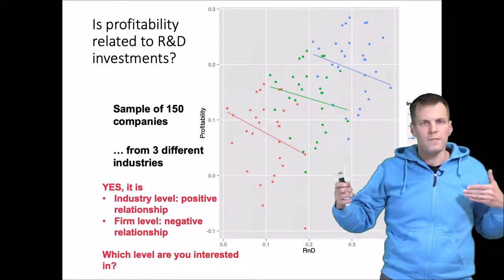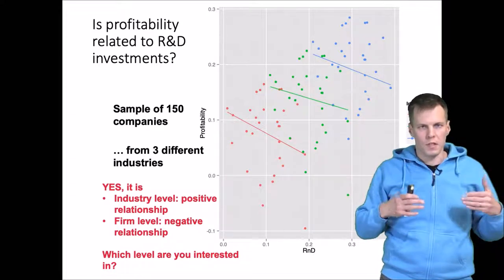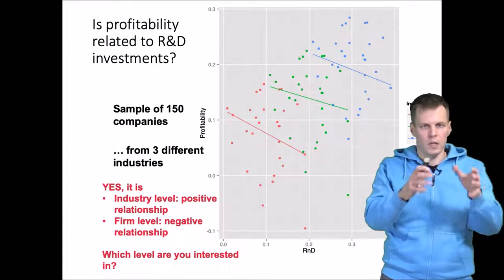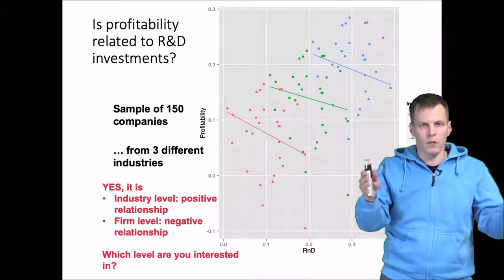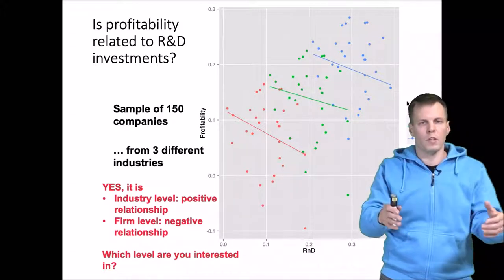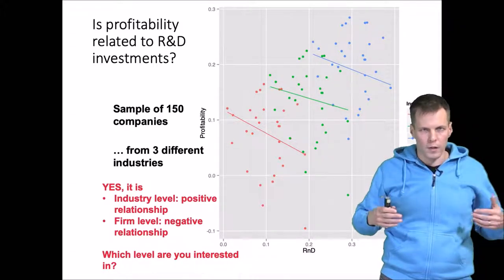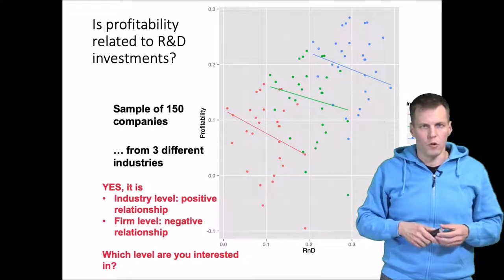So we have these different levels. Firms exist within industries. Industry is a larger level, that's a level two variable or level two unit, and firm is level one unit within the level two units of the industries.